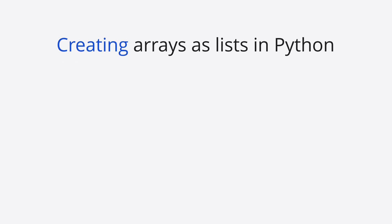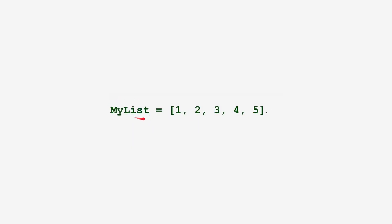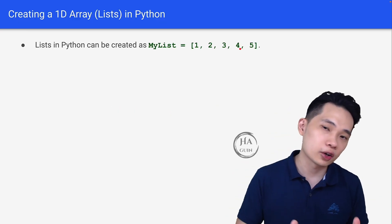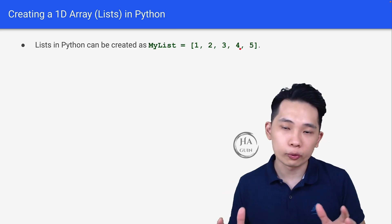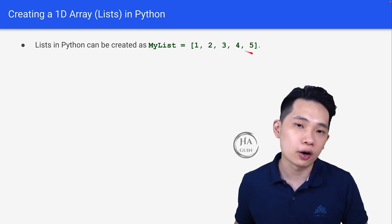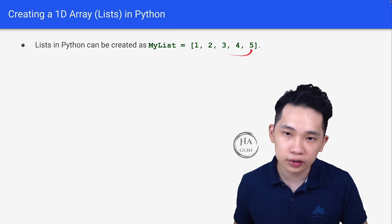The first step is this: lists in Python can be created as 'my_list' — this is just a variable name — equal to square bracket, and then 1, 2, 3, 4, 5. Basically, we are creating a list or an array with 5 elements inside and they are all integers for now.